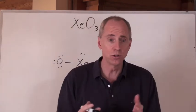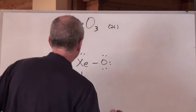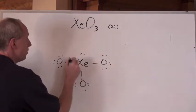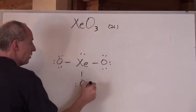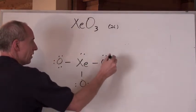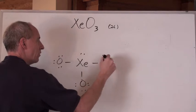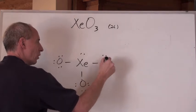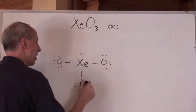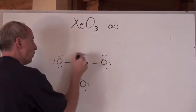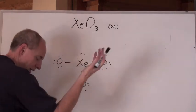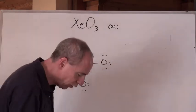Now you do the Lewis diagram. Put xenon in the middle, 3 oxygens around it. Each oxygen gets 4 pairs of electrons — that's a total of 8. 8 times 3 is 24, plus 25, 26. Beautiful — it looks like that's the Lewis diagram.